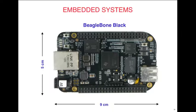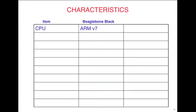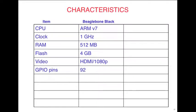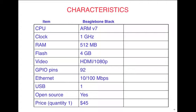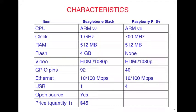The BeagleBone is a PC with an ARM on it about the size of a smartphone. It has ARM V7, clock at 1 GHz, half a gig of RAM, 4 GB flash, HDMI at 1080p, 92 I/O pins, 100 megabit Ethernet, a USB port, it's open source, and costs about $45-$55. Comparing to the Raspberry Pi B+: it runs ARM V6 at 700 MHz, also half a gig RAM but no onboard disk, 40 I/O pins, 4 USB ports, but it's not open source — that's the main reason we didn't want to use it.